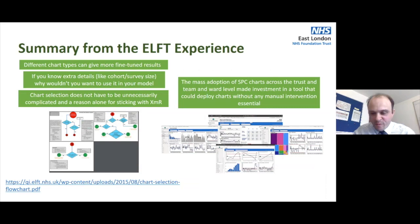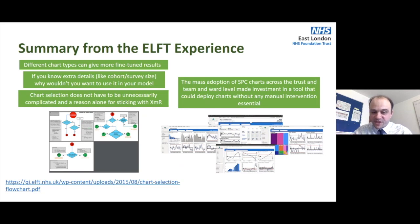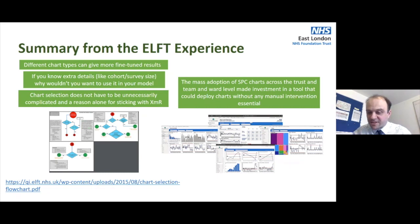Just a summary from the Alfred experience: a reminder of the flow chart we've got, which very easily identifies the models of SPC chart that can give you the greatest reflection of your data, considering things like your cohort sizes, your data types, and the frequency of events. I encourage people to take advantage — run some scenarios, run some comparative analysis like we did, and see the extra strength you get when you add in that extra data and the intelligence you already know about your systems.